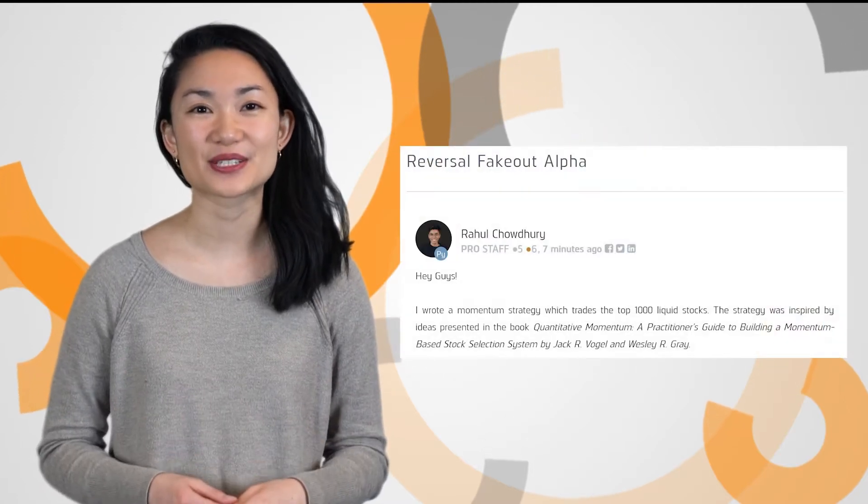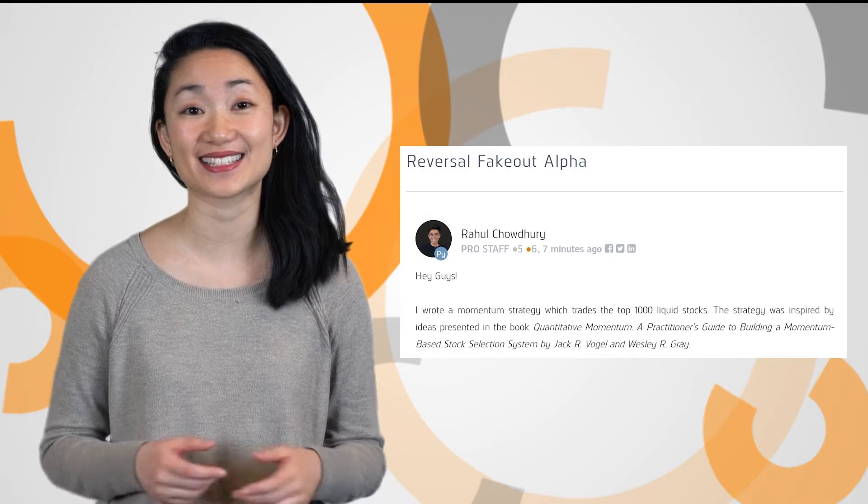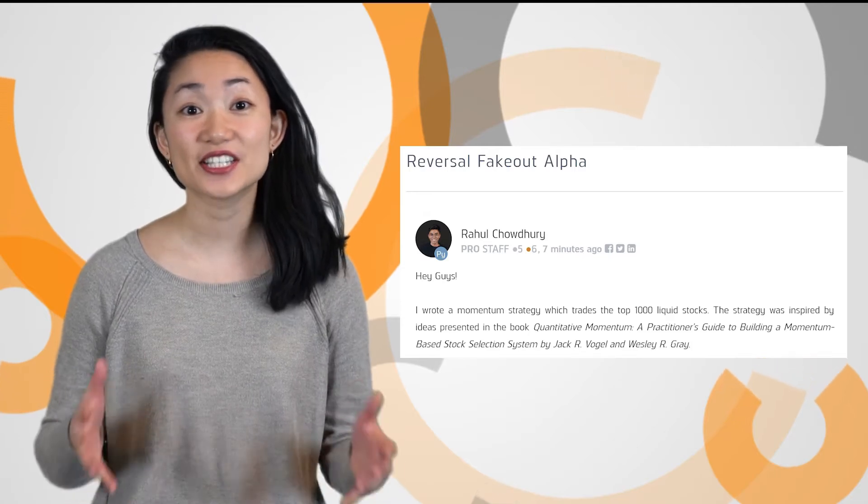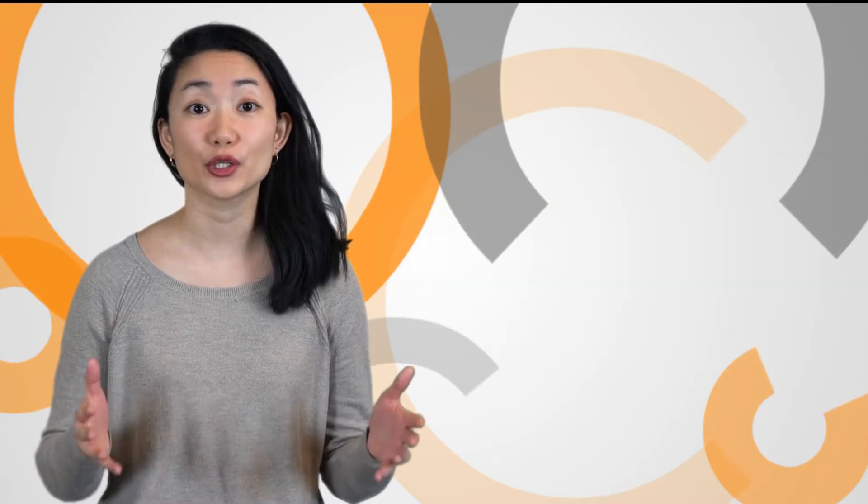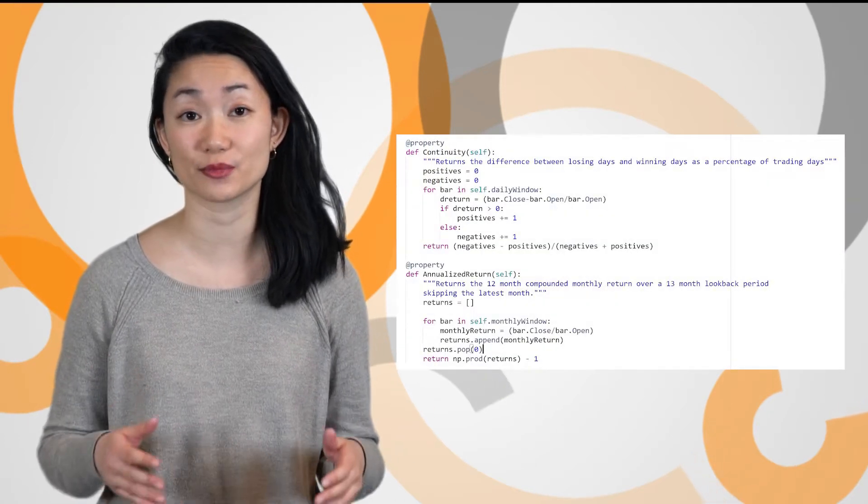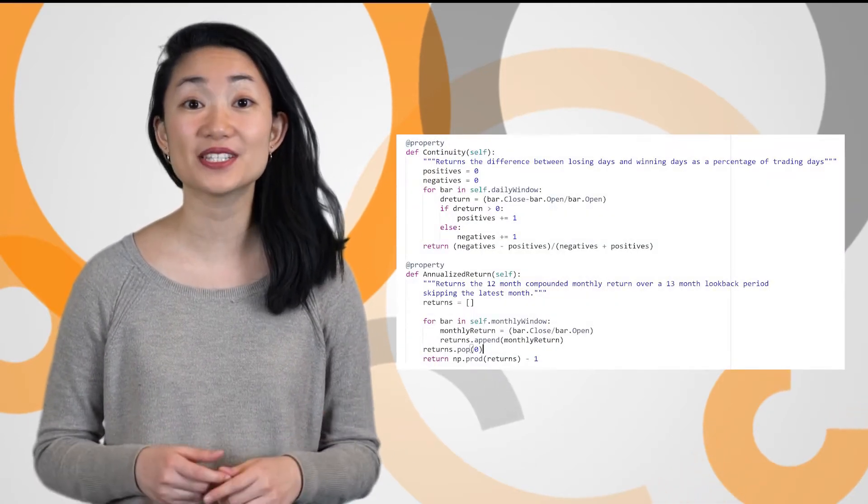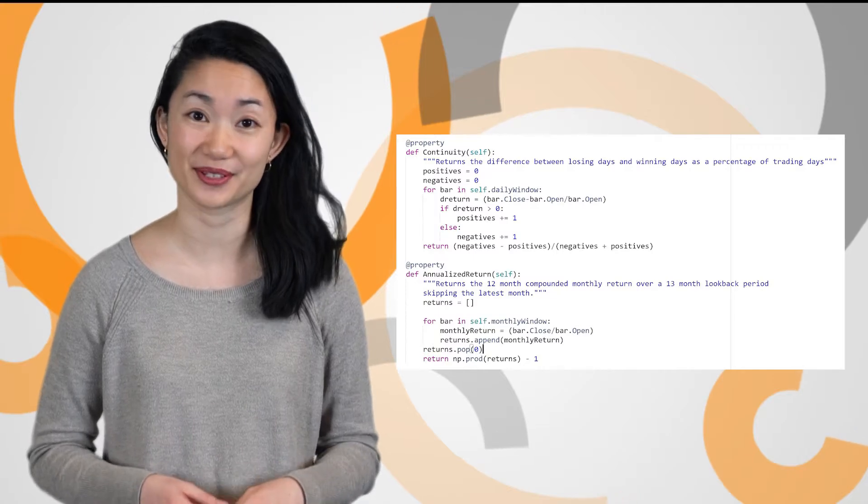In a new community post, Raul shares a strategy he made as his Fun Friday project. His strategy is based on long-term and short-term momentum effects, where a long-term trend persists and a short-term trend reverses. The implementation trades the top thousand most liquid stocks.